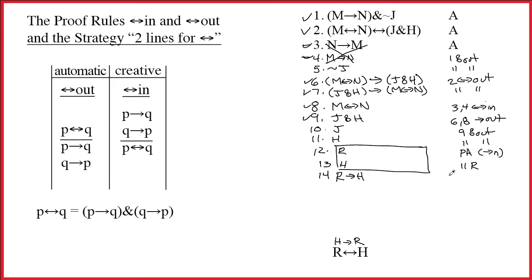So 13 is going to be 11 R. And success! I just proved R arrow H. So on 14 I'm going to say 12 through 13, arrow in, and I'm halfway done. I proved R arrow H. Now let's prove H arrow R.